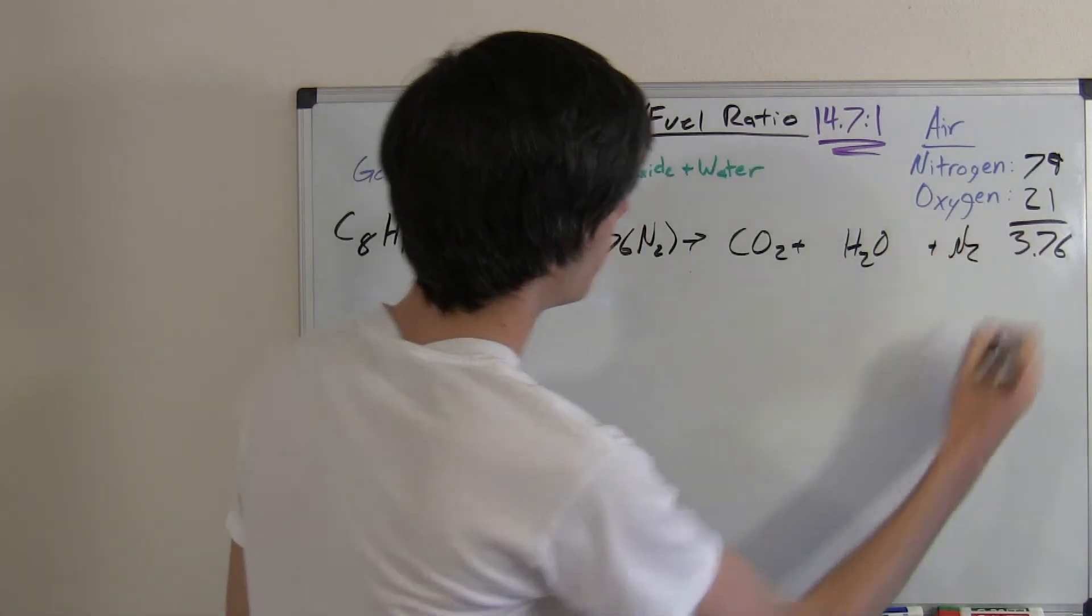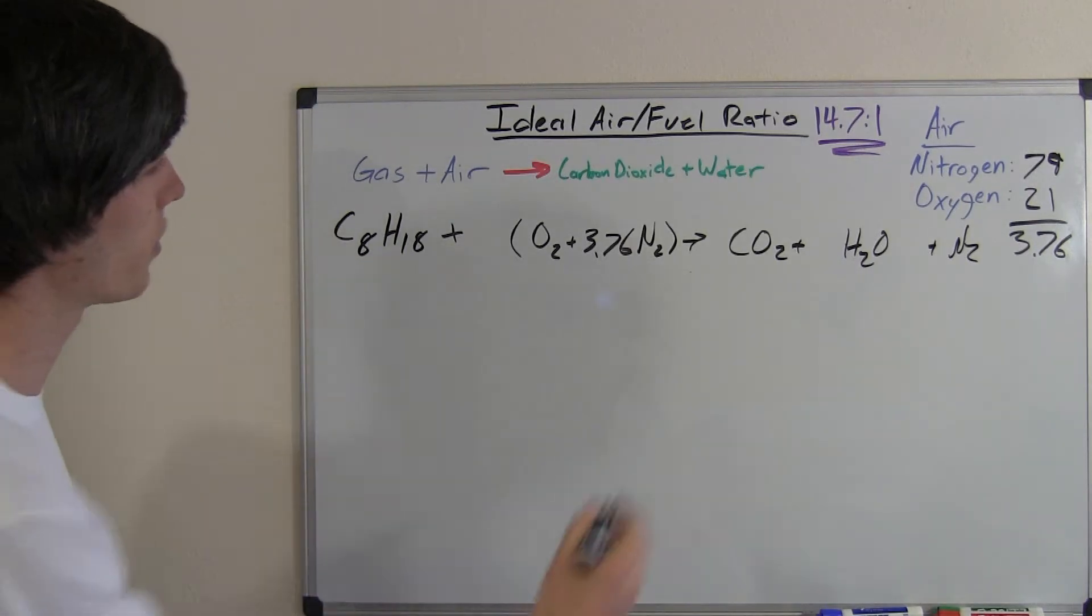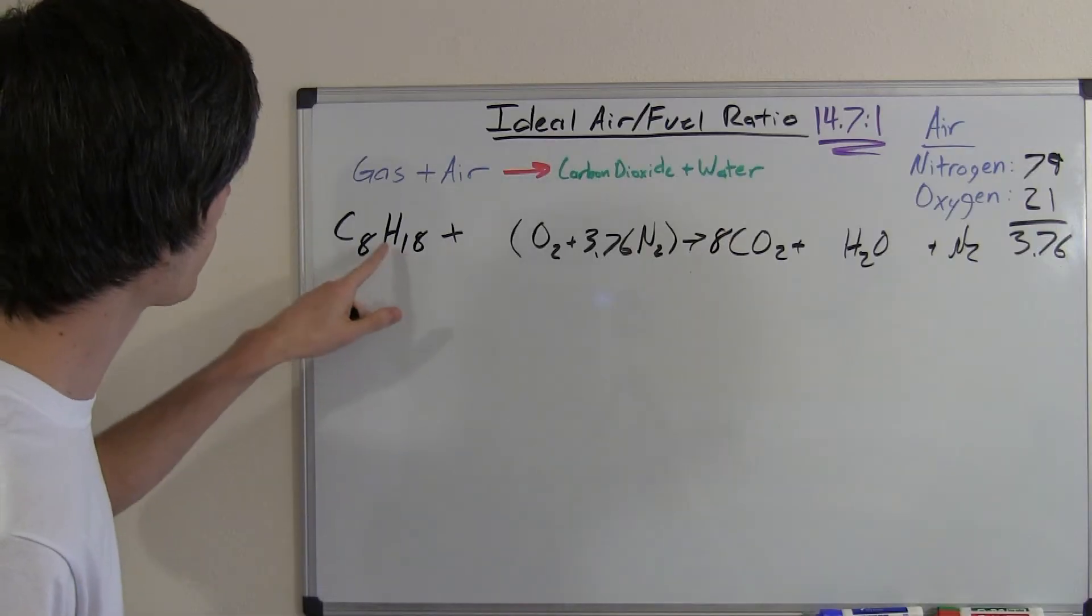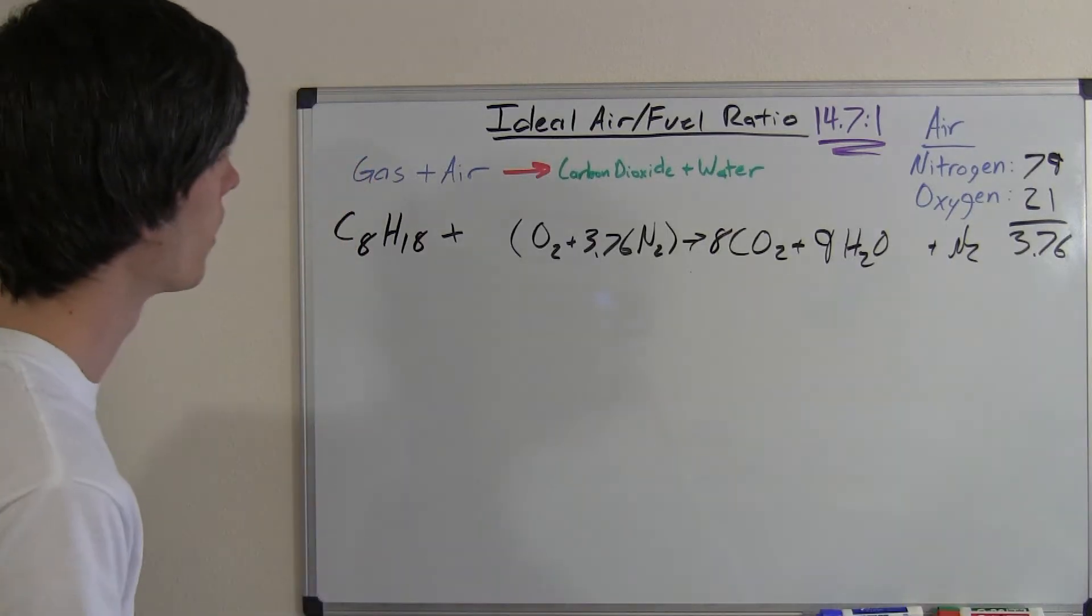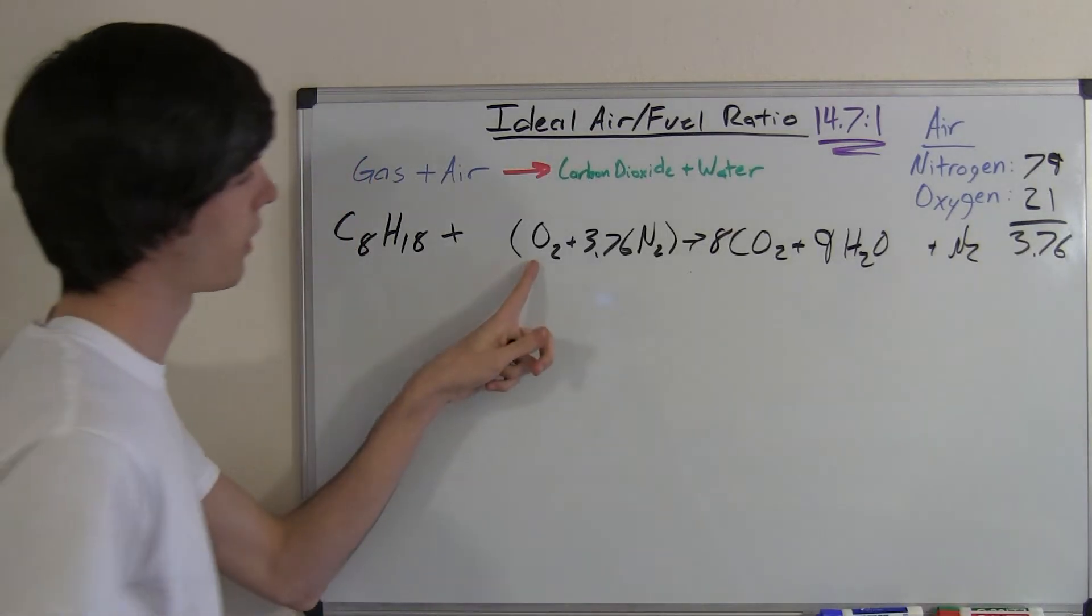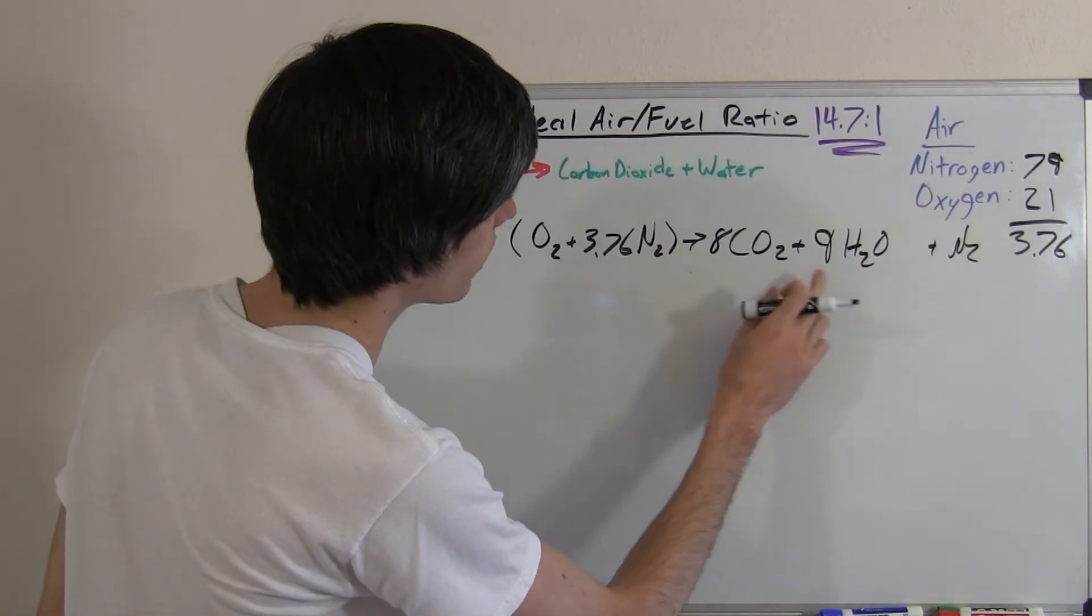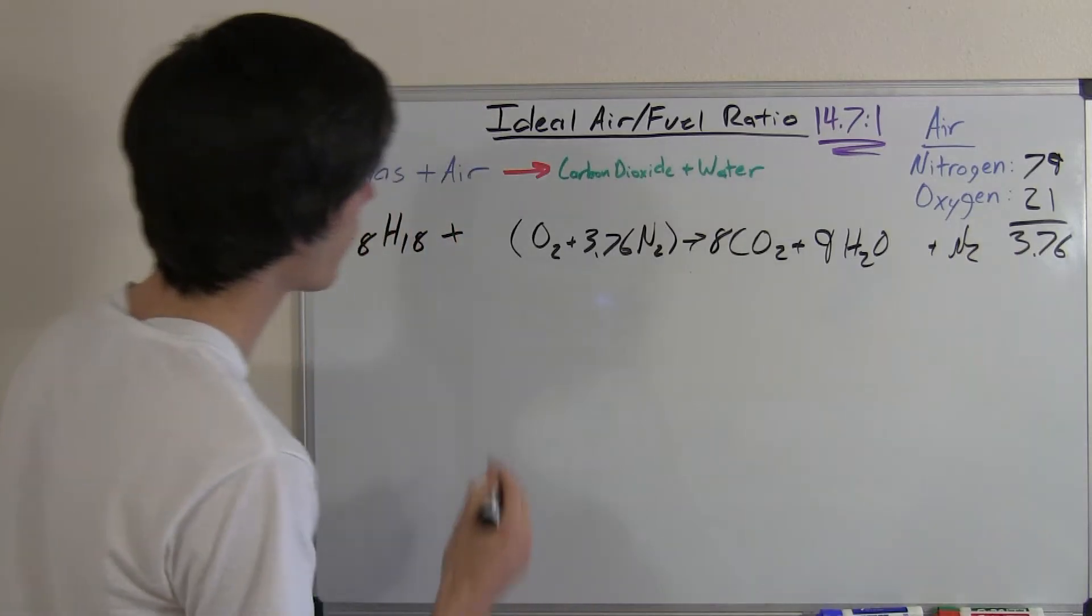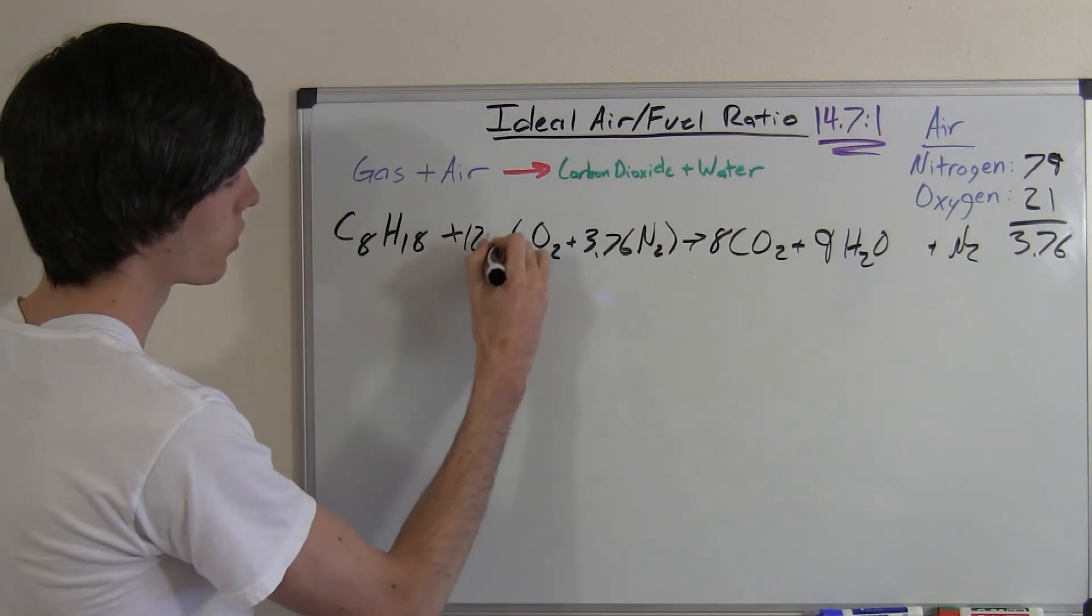So in order to do this we'll just start with the carbons. We've got eight carbons here so we know we're going to have eight carbons there. We've got 18 hydrogens here, so we know we want to have 18 here. 9 times 2 is 18. So now we want to balance the oxygen here. 2 times 8, we've got 16 plus 9, that's 25. So we've got 2 here, 25 divided by 2, that'll give us 12.5.